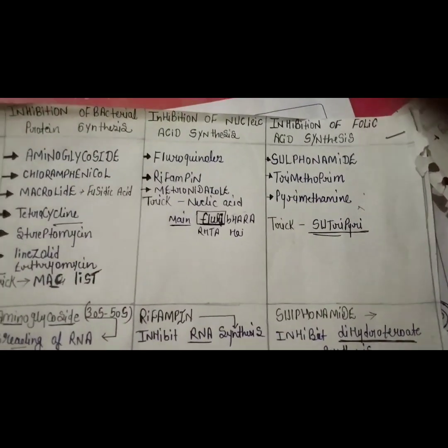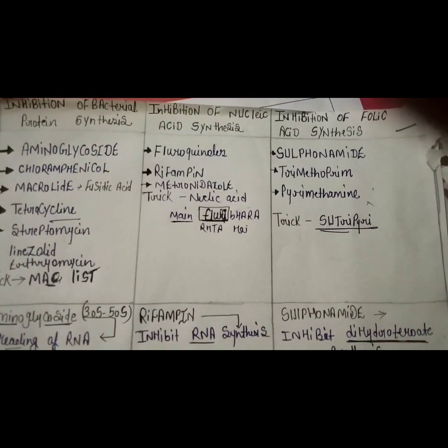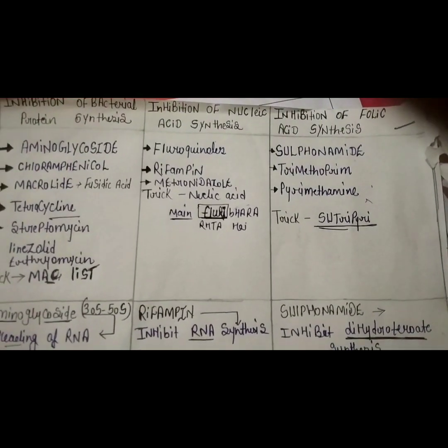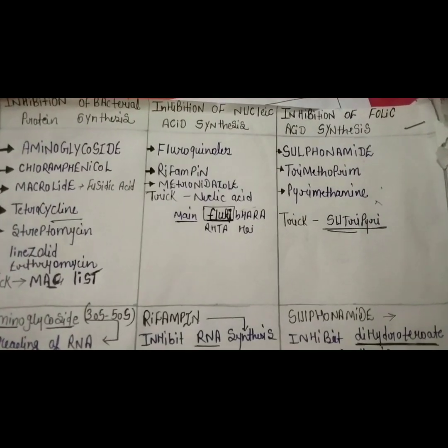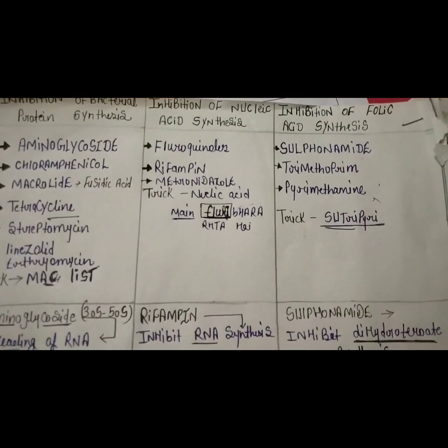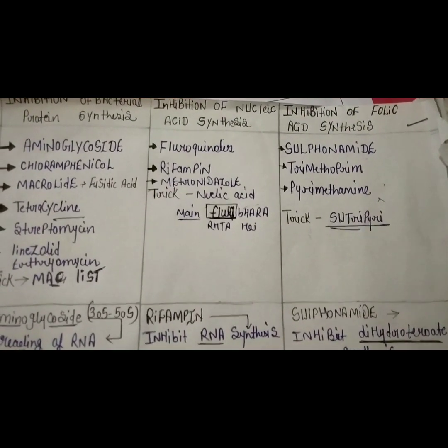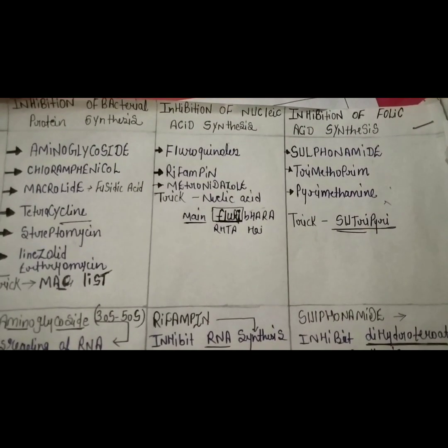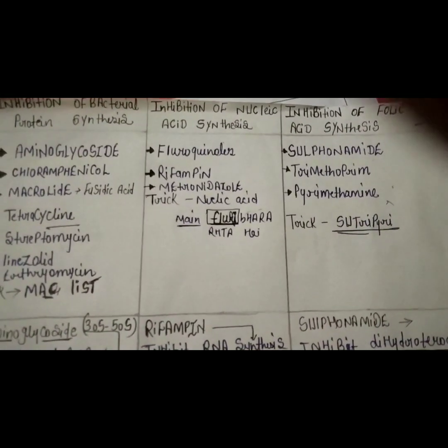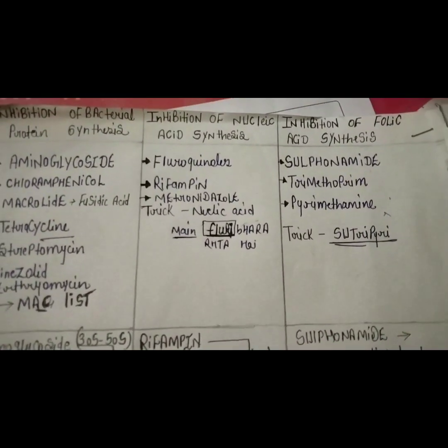Now discussing inhibition of nucleic acid synthesis. The trick I have made is 'FLURRY' — the nucleic acid is in the cytoplasm. Flurry stands for fluoroquinolones and rifampin, and it also includes metronidazole.